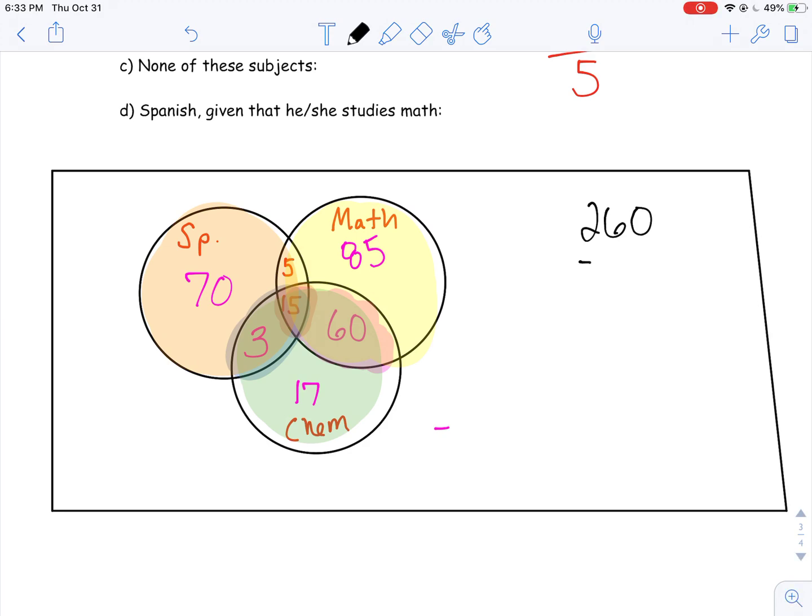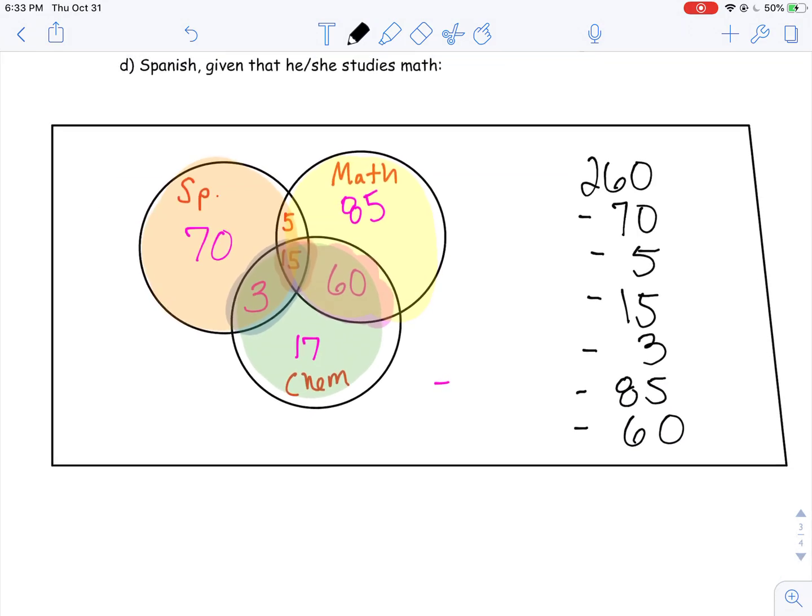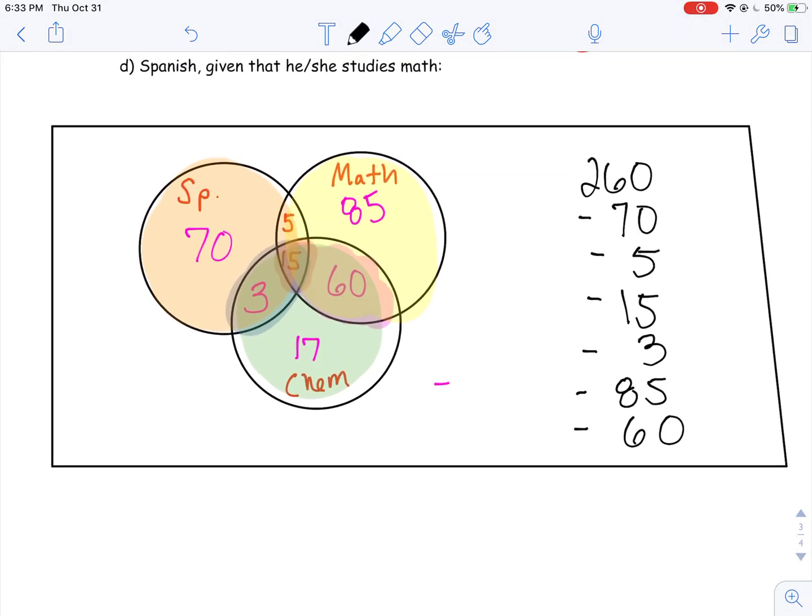I'm going to take away the 70 who take just Spanish, the 5 who take Spanish and Math, the 15 who take all three, and the 3 who take Spanish and Chemistry. I'm also going to take away the 85 who take just Math, the 60 who take Math and Chemistry, and notice I do not have to use the 15 and 3 again because I've already used them. They're right here, 15 and 3. And now the only value I have that I haven't used is the 17 who take just Chemistry. Everything else has been accounted for.